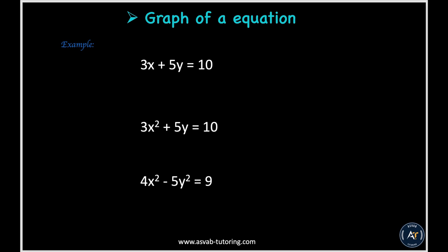If you have 3x plus 5y, right? So it doesn't have any x exponent. So if it doesn't have x exponent, that will be a straight line.